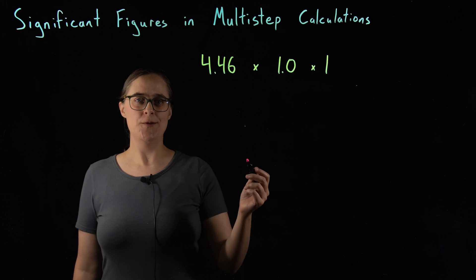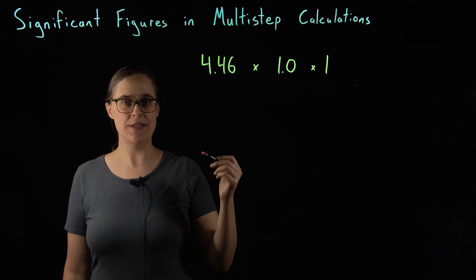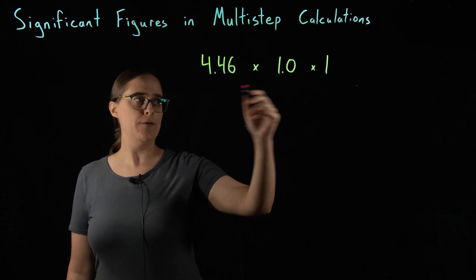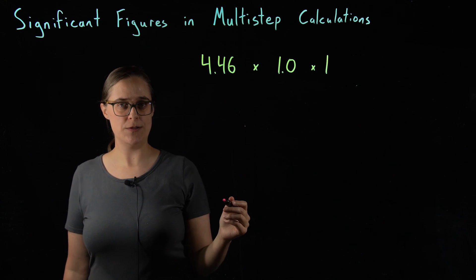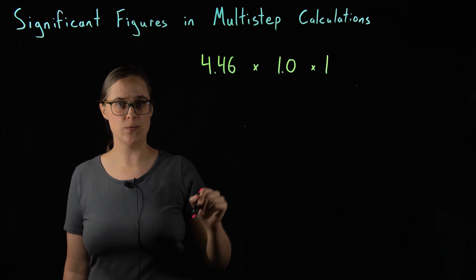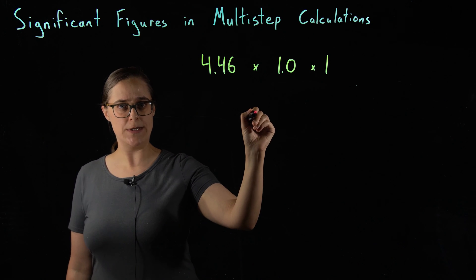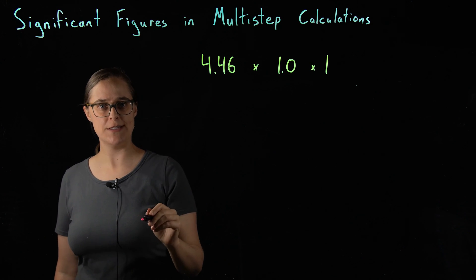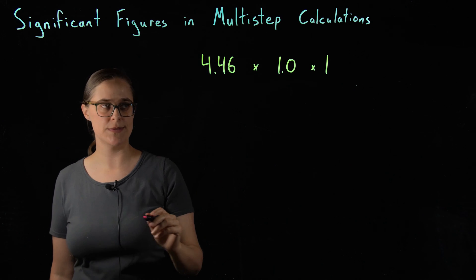I am going to do an example problem that does a really great job of explaining why rules 2 and 3 are so important. If you are tempted to skip it because you think it looks way too easy, don't. This is the most important example problem I am doing if you are here to learn about significant figures in multi-step problems.